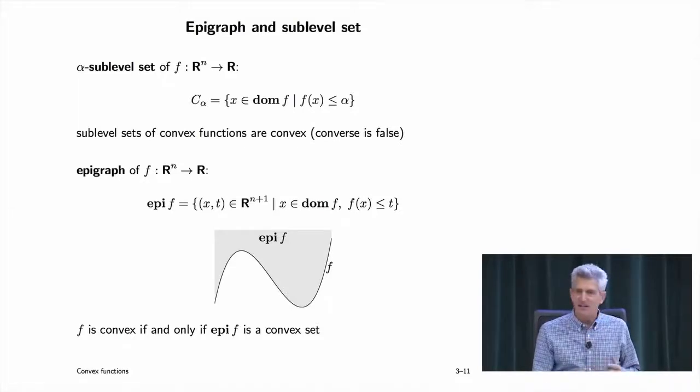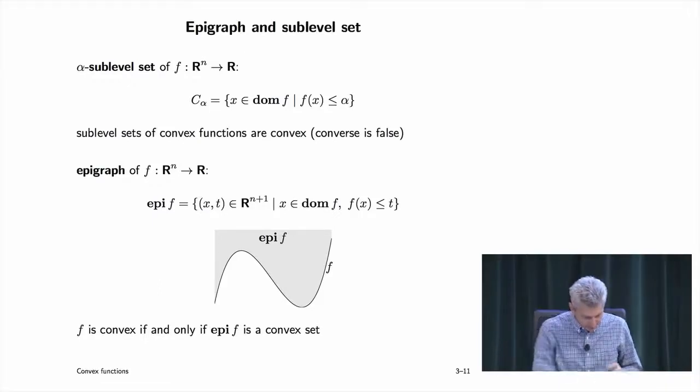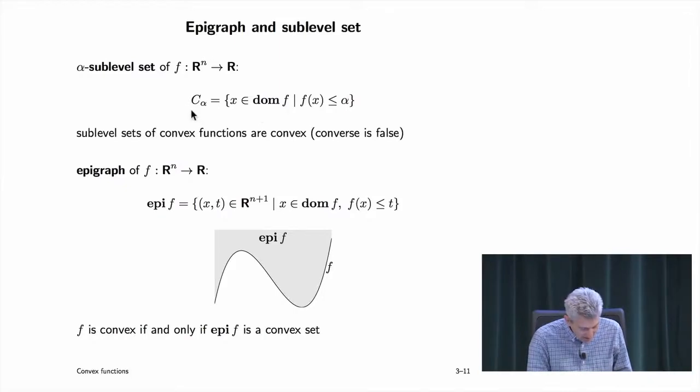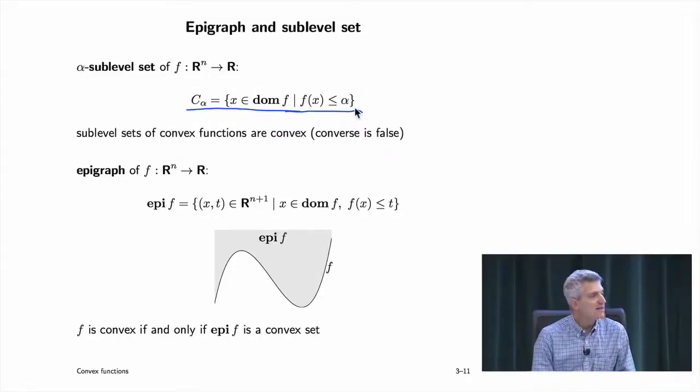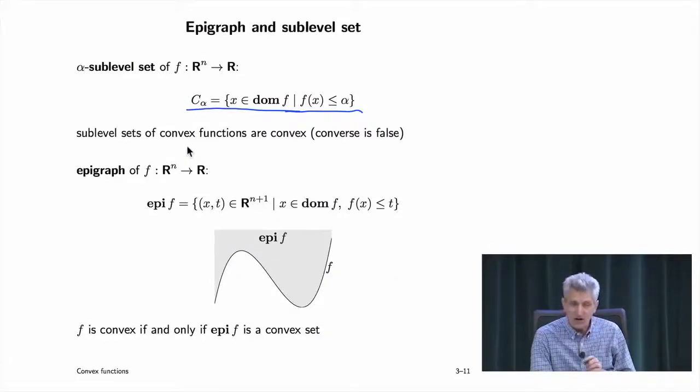What's the connection between convex sets and convex functions? It's through a simple thing called the epigraph. If I have a function, its alpha sublevel set is the set of points where f is less than or equal to alpha. If f is a convex function, its sublevel sets are convex. The converse is false — you can have convex sublevel sets without being a convex function.